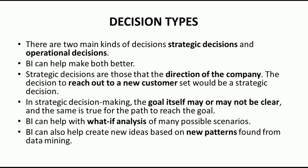Strategic decision-making is very difficult because it is hard to know what will happen in the future. Using Business Intelligence, we can perform what-if analysis: if I do this, what will happen? Depending on that kind of analysis we can decide what to do now so that we can grow to the target level after five or ten years. We can create different scenarios, understand what works fine for our organization, and use it to grow. These long-term decisions are called strategic decisions.